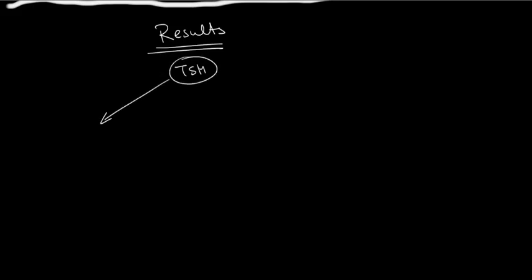Let's talk about these results and make a flow diagram. We started with repeating the TSH first. That's going to come back one of two ways: either it's going to be back normal, or it's going to still be twice the upper limit of normal — still borderline high.